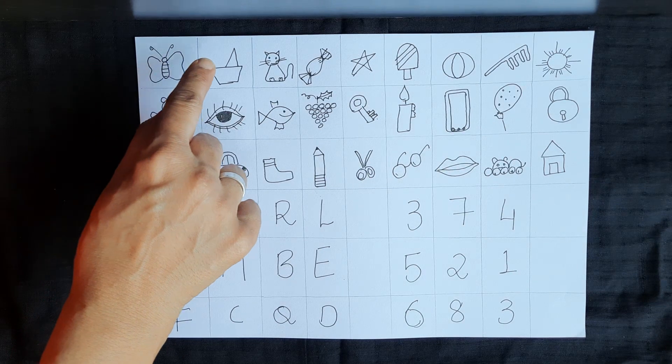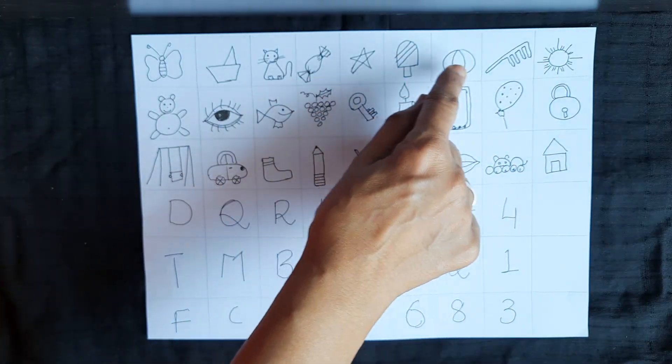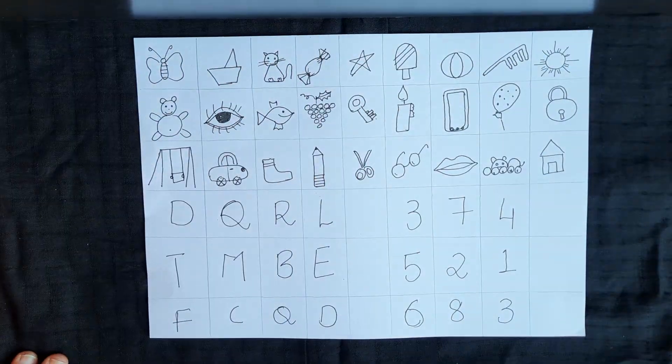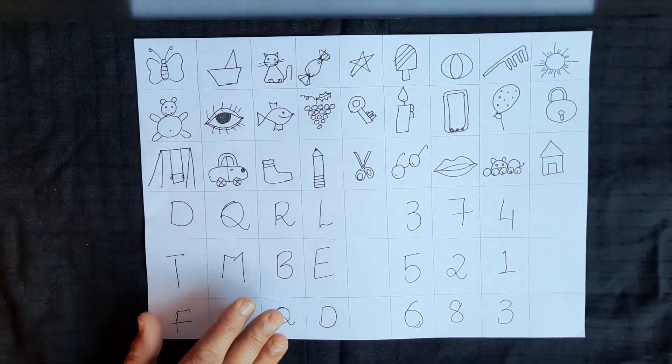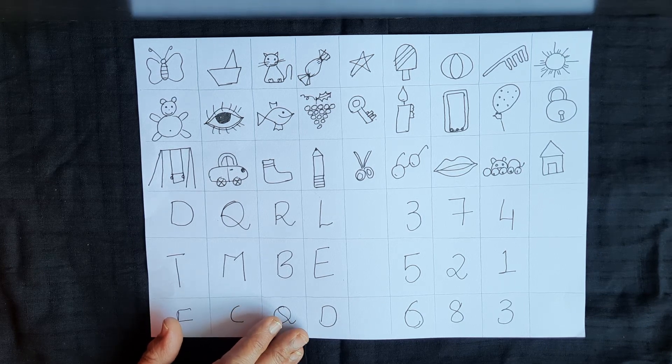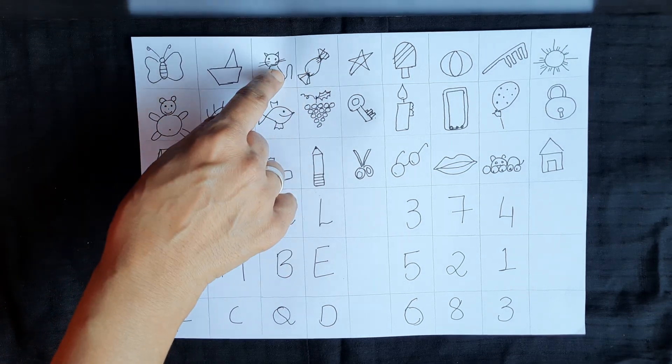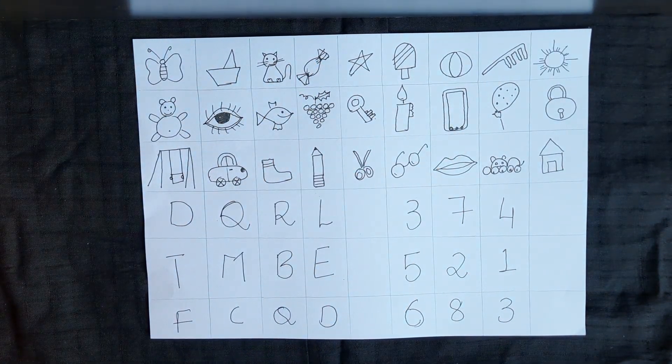The second game is again naming but you alternate with the child. It's naming with turn taking. You name one picture, child names the next, then you, then the child. That helps with the turn taking skill also.